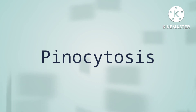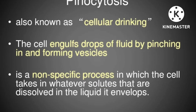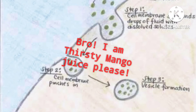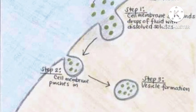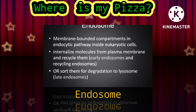Pinocytosis is the cellular drinking. It is when the cell engulfs drops of fluid by pinching in and forming vesicles. It is a nonspecific process in which the cell takes in whatever solutes are dissolved inside it, including liquids with macromolecules and lipids.